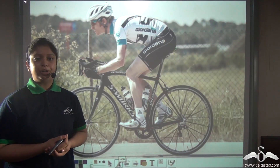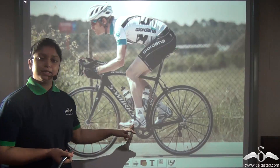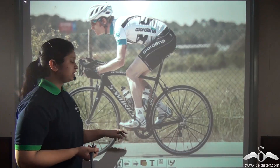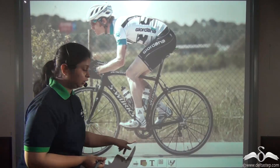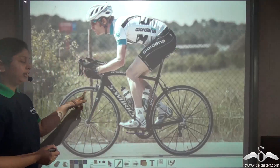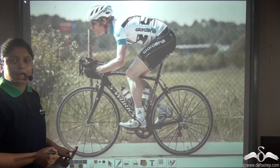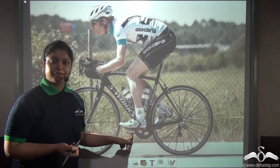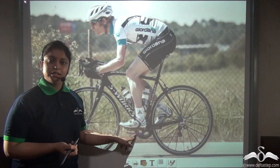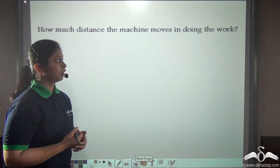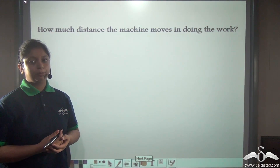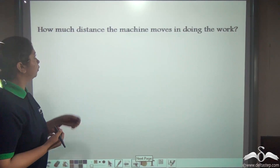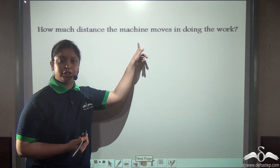We have seen in our previous lectures that the pedals of a bicycle is a simple machine, because we apply a small effort on the pedals to move the wheels which move a very large distance. So the pedals of a bicycle in this case is a simple machine. Now we know that simple machines have many advantages, but if I ask you how much distance the machine moves in doing the work?